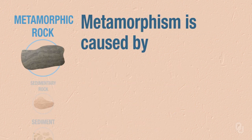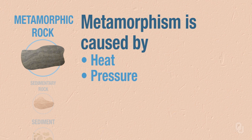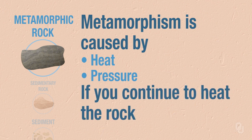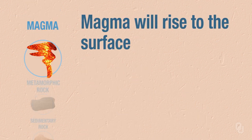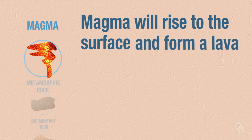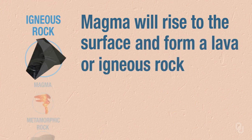The metamorphism is caused by heat and pressure. If you continue to heat that rock, it will melt and become magma, or molten rock, again. Then it will rise up to the surface and form another lava, or another igneous rock.